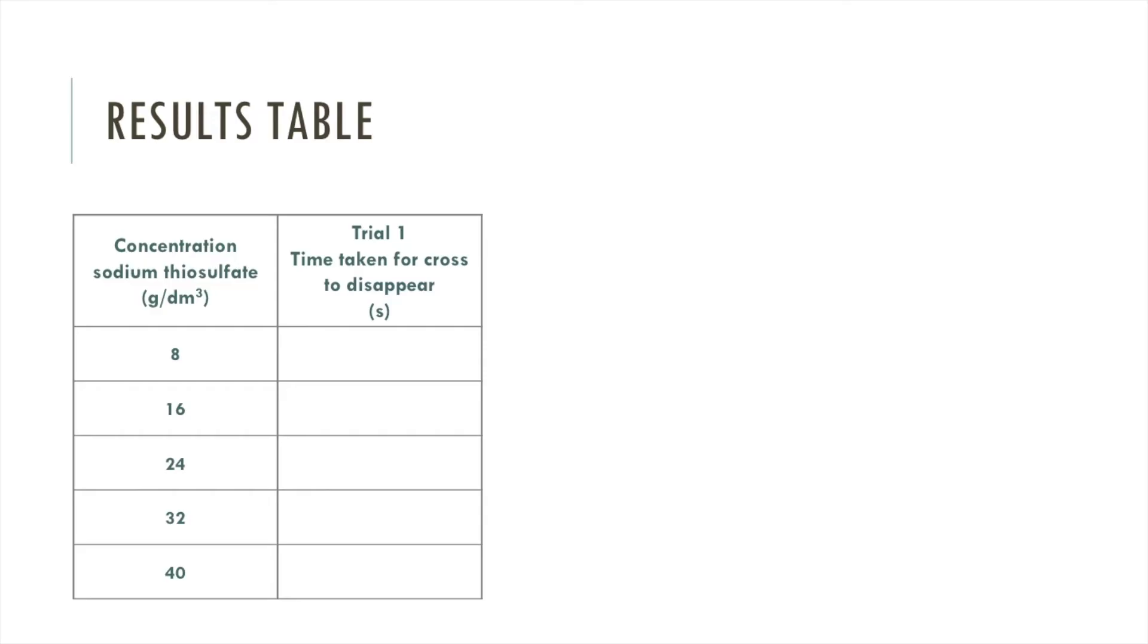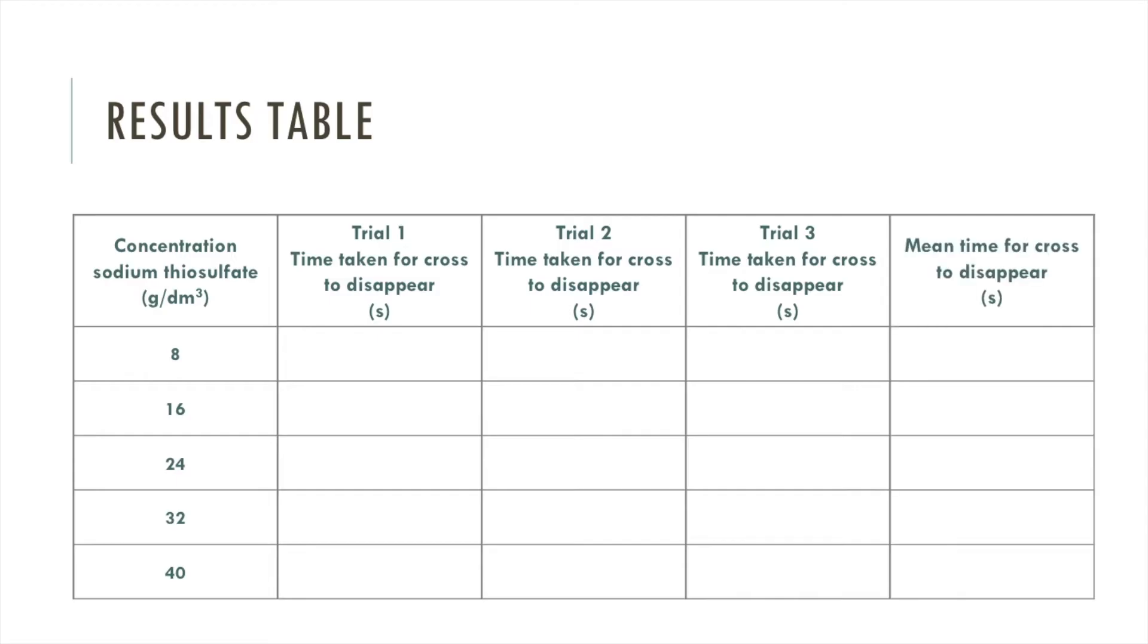Now you'll see I've put trial 1 here because you're going to repeat these reactions a total of 3 times and then calculate the mean. So you'll have a trial 1, a trial 2, and trial 3, and then a column for the mean. You calculate the mean by adding up the values of all the trial runs you did and then dividing by the number of trials.